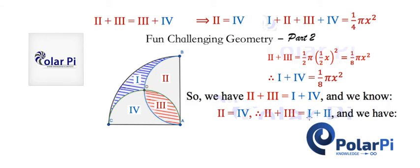Since this last equation has region two on both sides, by cancellation we conclude what we had wanted to conclude all along: the area of region one is equal to the area of region three. I hope you enjoyed this and keep watching — many more fun problems to come.